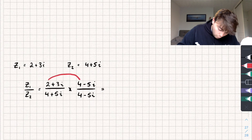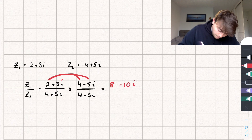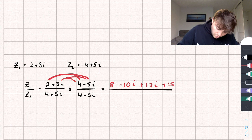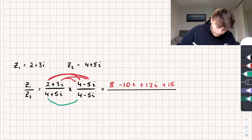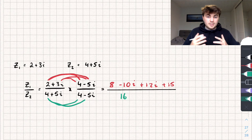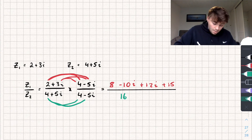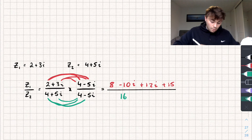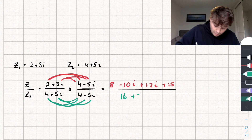Expanding the numerator: 2 times 4 is 8; 2 times negative 5i is negative 10i; 3i times 4 is plus 12i; and 3i times negative 5i gives plus 15. For the denominator: 4 times 4 is 16; then 4 times negative 5i is negative 20i, but 5 times 4 gives positive 20i so they cancel; and 5i times negative 5i gives plus 25.